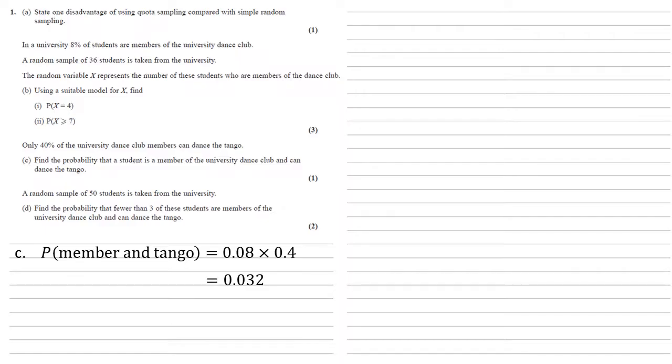A random sample of 50 students is taken from the University. For part D, we need to find the probability that fewer than three of these students are members of the University Dance Club and can dance the tango.